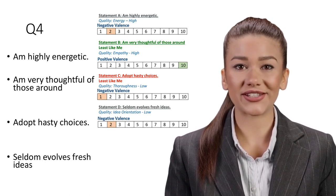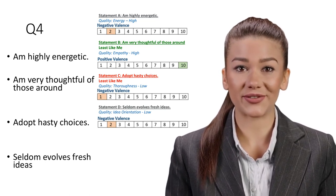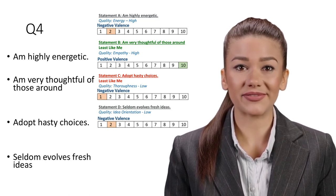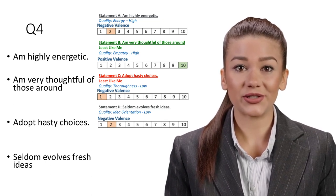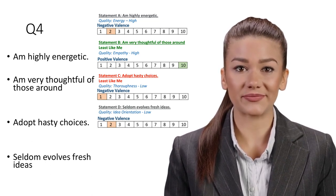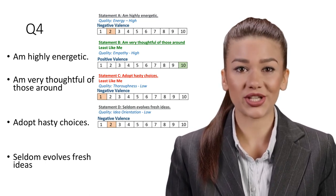Statement C: Adopt hasty choices. Least like me. Quality: Thoroughness, Low. Sometimes we make hasty decisions that end up being bad decisions that are neither good for business nor for the customer. Lacking thoroughness in decision-making is a highly negative quality for candidates to demonstrate.